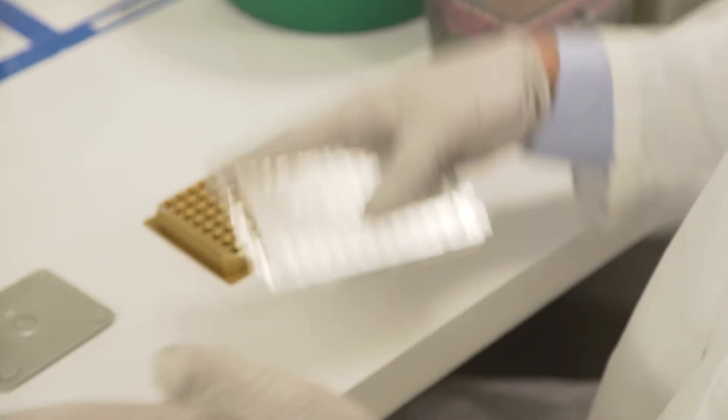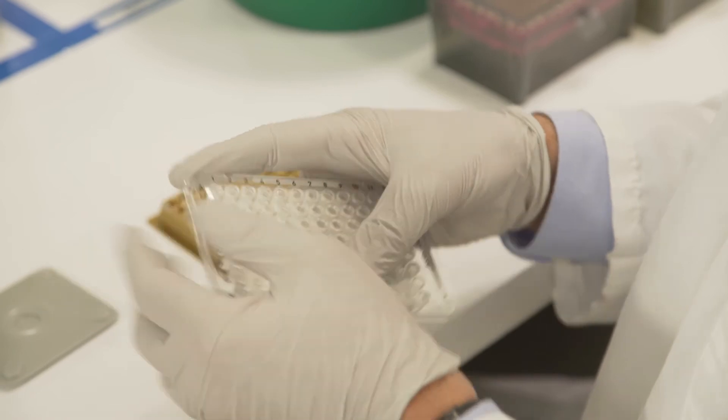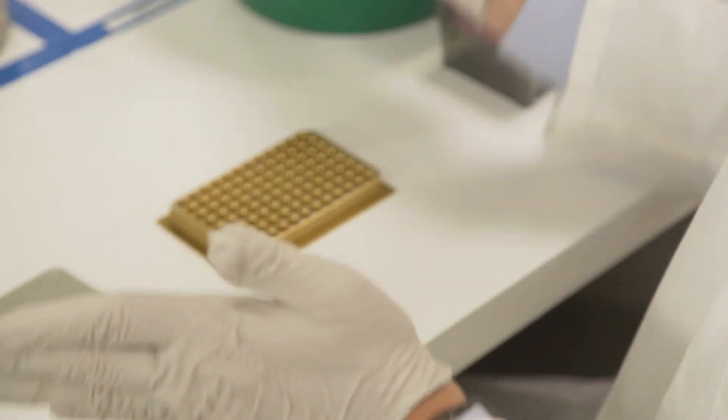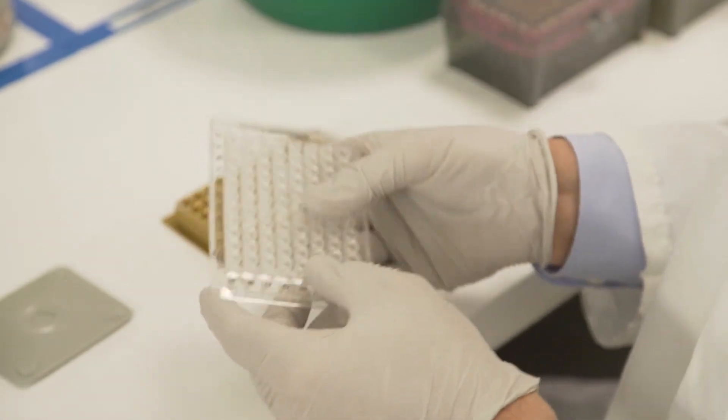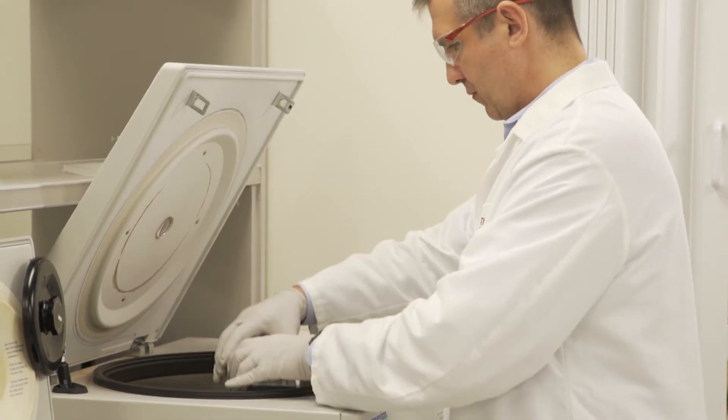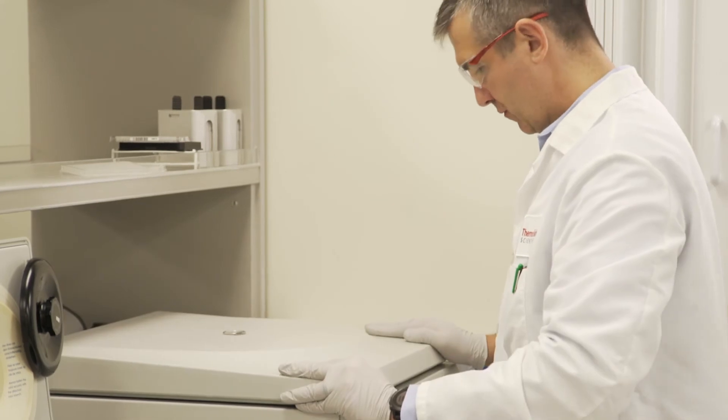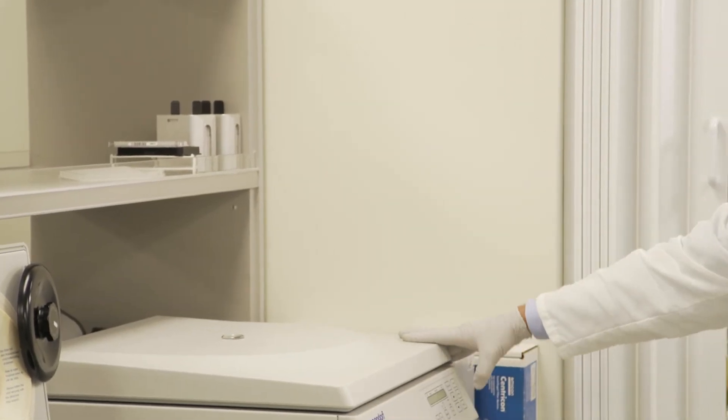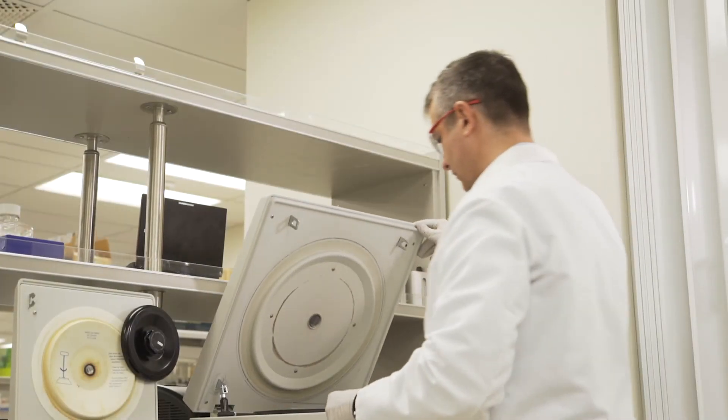Adequate mixing is critical and can be achieved by carefully pipetting up and down at each step or by striking the plate against your hand three times, rotating the plate, and striking it three times again. Then centrifuge the plate at 3,000 times g to ensure all the liquids are collected to the bottom of the wells and return the plate to the cold block.